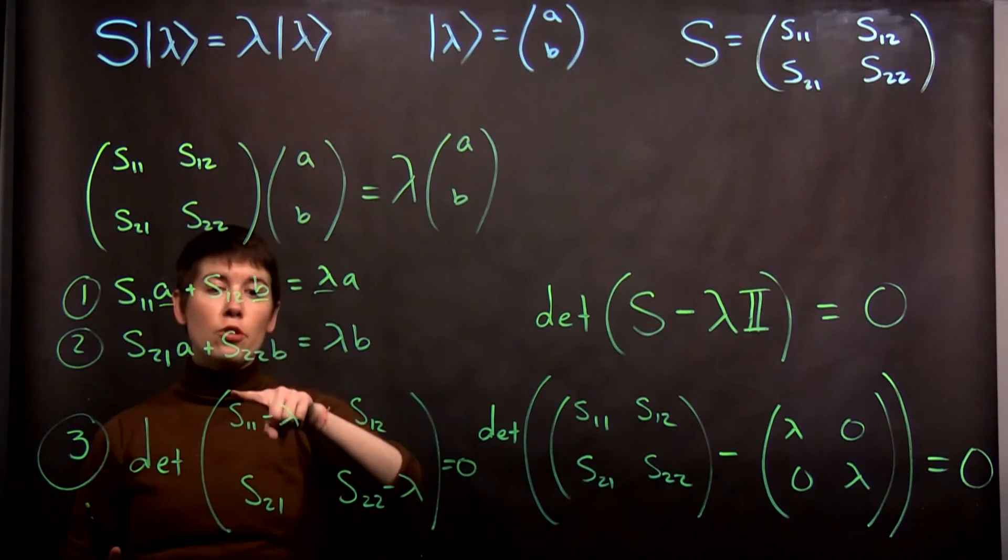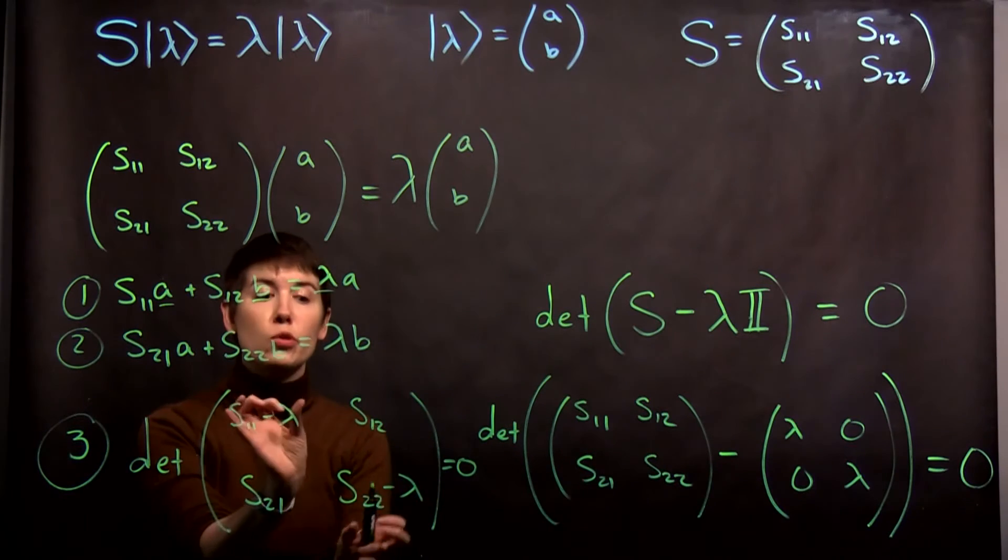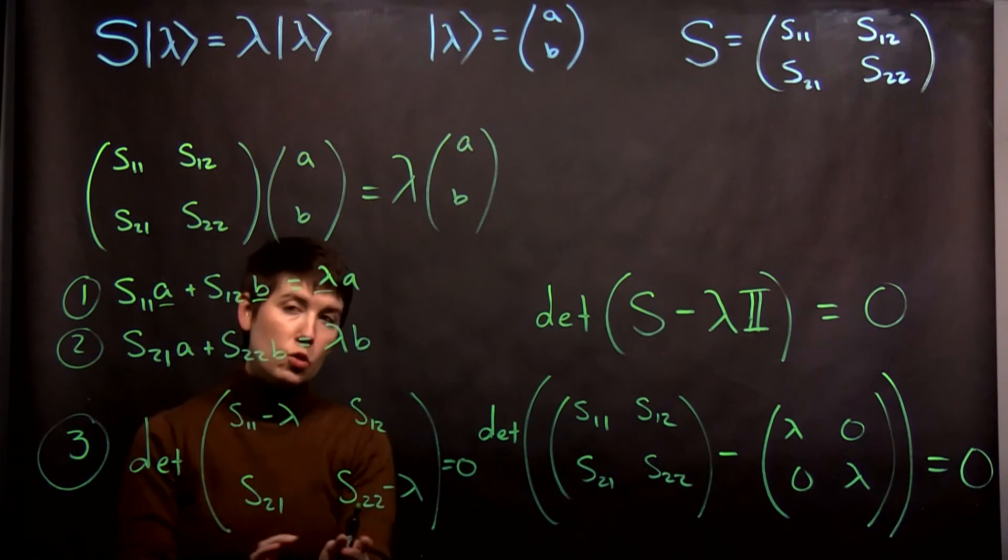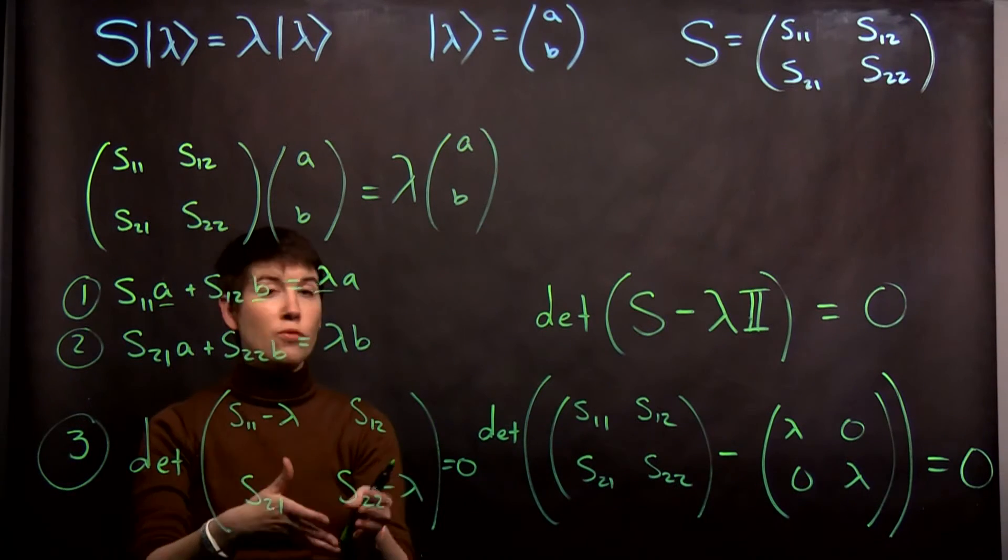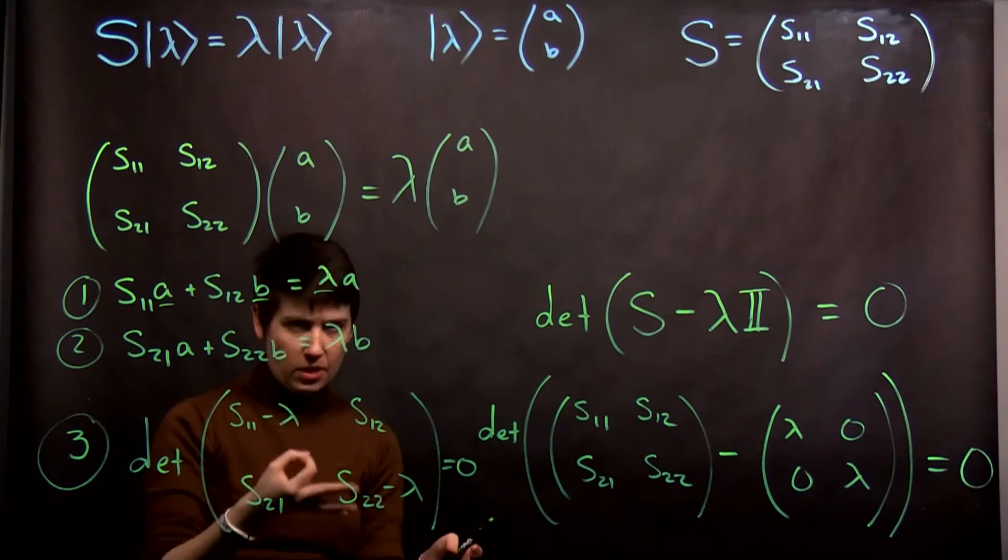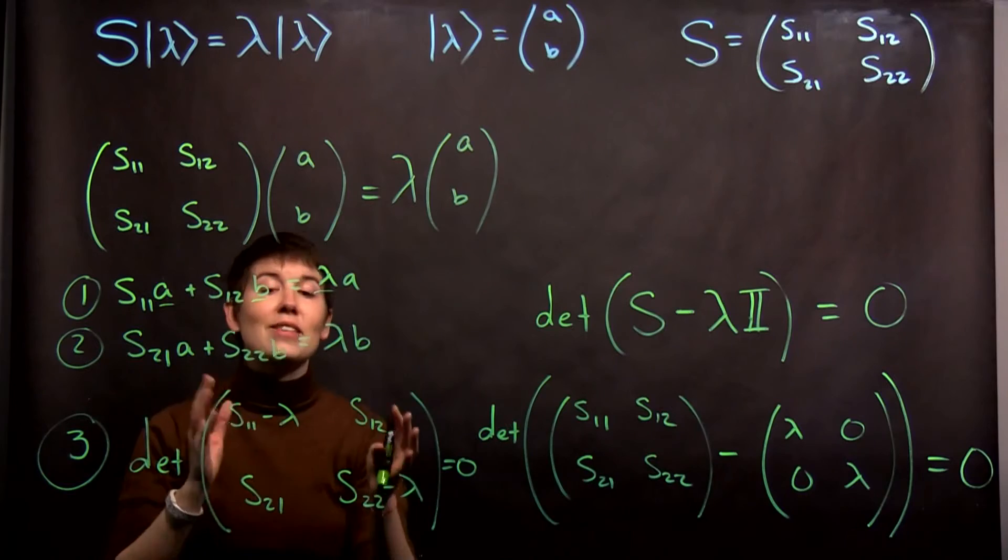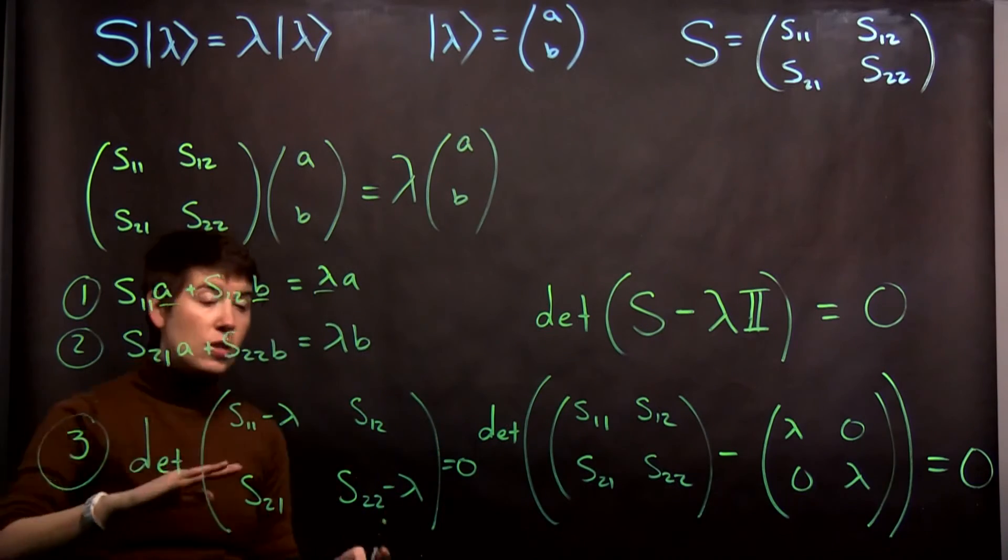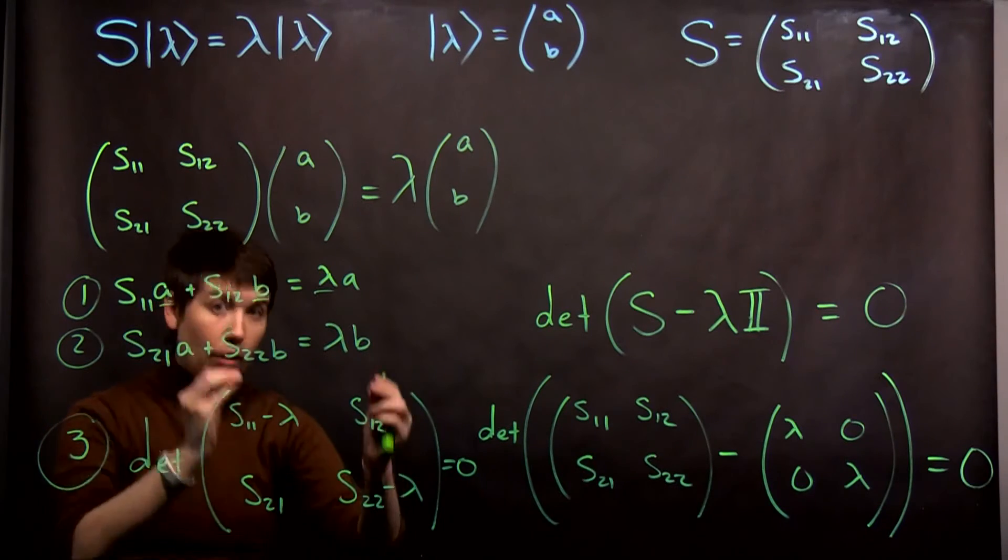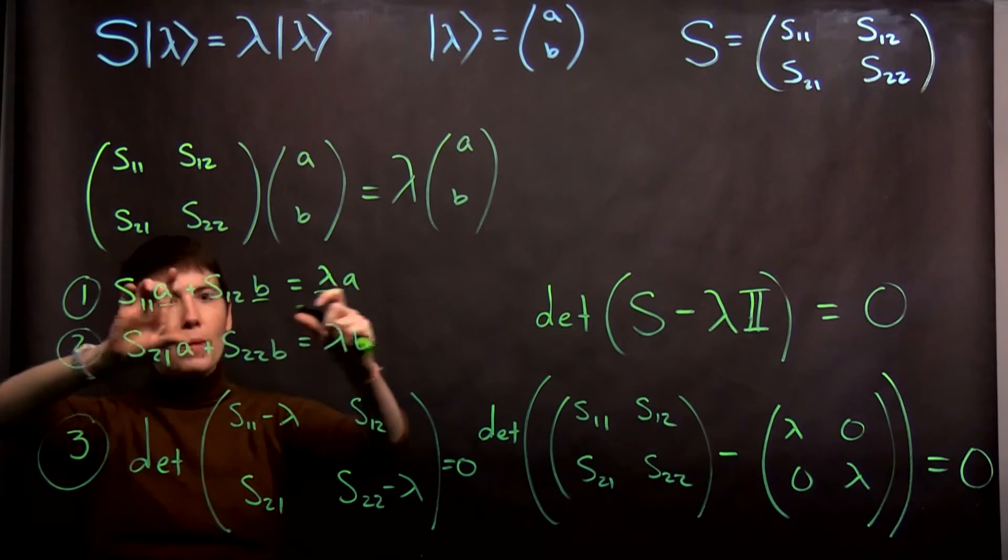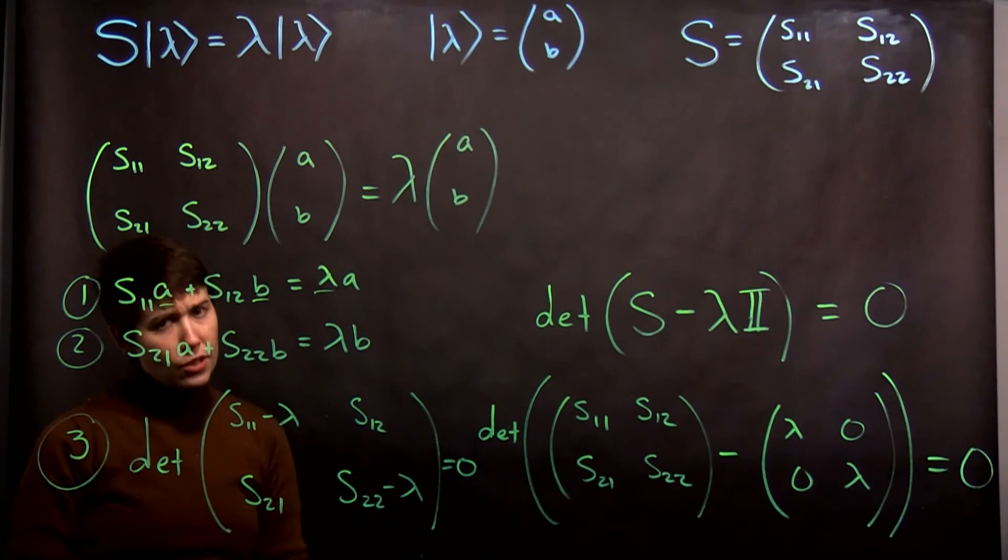When you go to do the determinant, remember that you're doing down minus up. This is actually going to give us a quadratic, because you're going to have this term multiplied by that term. So when you go to solve, you will actually get two values for lambda from this. If it was a three by three, you would get three values for lambda from it. From this you can figure out what lambda is, because a and b does not appear. This determinant, this characteristic equation, is going to give you your lambda values, and from that you can then come back up and solve for a and b.